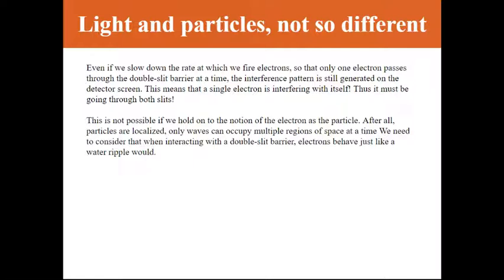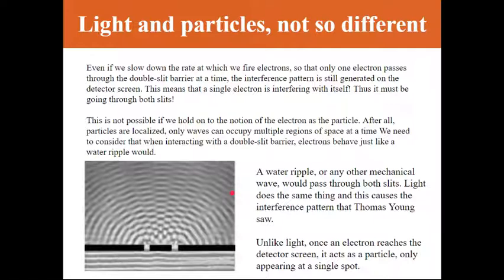If we let go of that notion and begin to rethink how we see electrons, the fact that an electron can go through both slits makes sense. Rather than thinking about electrons the way we always thought about them, about these little balls orbiting a nucleus, let's think about what a water ripple would do when encountering the double slit barrier. If you were to shoot a water ripple into the barrier here, it will pass through both slits. The same thing light does when you shoot a monochromatic laser, it passes through both slits and creates an interference pattern.